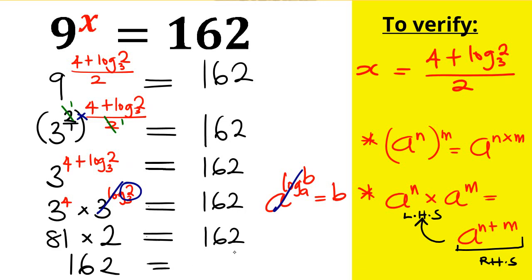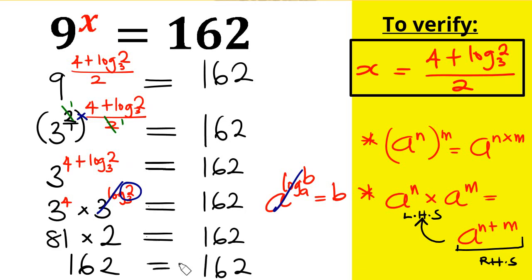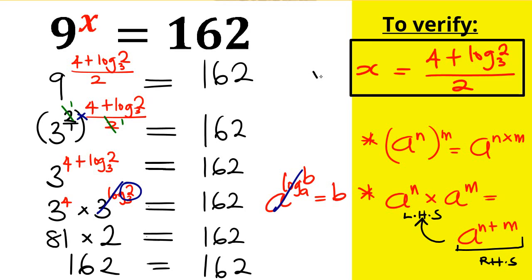This is the same as the 162 we have in the original equation. Hence, the value of x equals (4 + log 2 base 3) over 2 is absolutely correct.